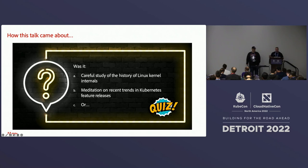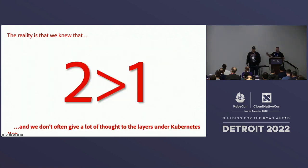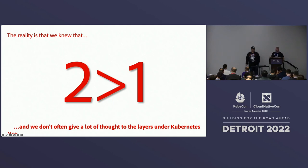So how did this talk come to be? I'd love to sit here and tell you that Tuj and I got together and did a careful study of Linux history internals and picked out a great topic, or that we had a meditation on Kubernetes releases — but neither of those things happened. What really happened was we knew two is greater than one. We're operators, Kubernetes operators, and we really focus normally at the API level. Give me an API, let me deploy what I want. We don't really think about what's underneath Kubernetes. We want to deal with the fun stuff — the YAML. Everyone loves YAML. Today we're not talking about YAML.